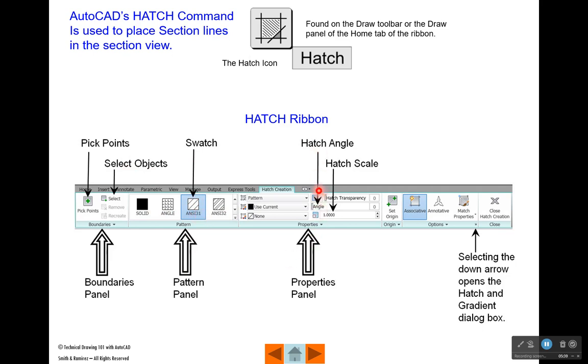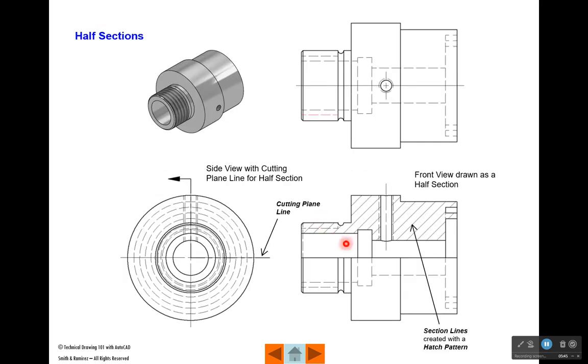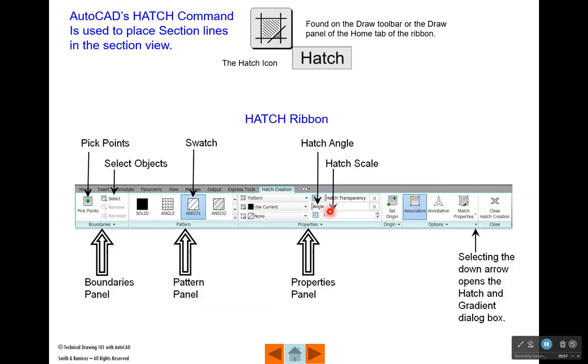You can also change that angle. You can change the scale, and what the scale does - if I change the scale, it will change the distance between these lines here. Now that angle of ANSI 31 is already set at 45 degrees, so you don't need to go in here and change the angle to 45 in order to get it to look like this.